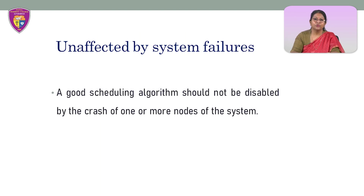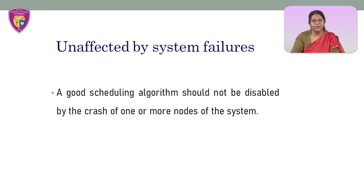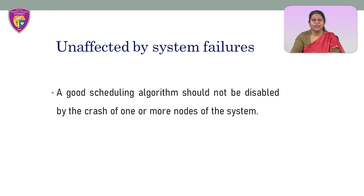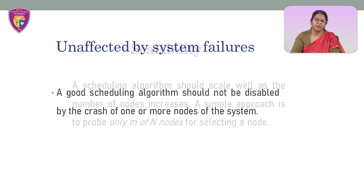A good scheduling algorithm should not be disabled by the crash of one or more nodes of the system — it should be stable. Also, if the nodes are partitioned into two or more groups due to link failures, the algorithm should be capable of functioning properly for the nodes within a group. Algorithms that have decentralized decision-making capability and consider only available nodes in their decision making have better fault tolerance capability.